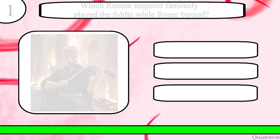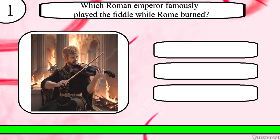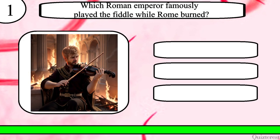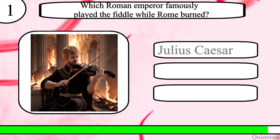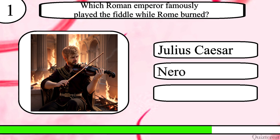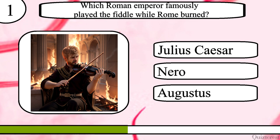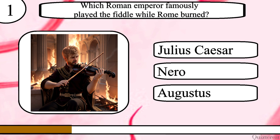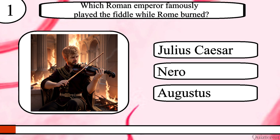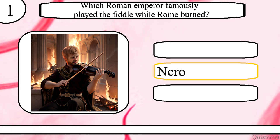Question 1. Which Roman emperor famously played the fiddle while Rome burned? Julius Caesar, Nero or Augustus? The correct answer is Nero.